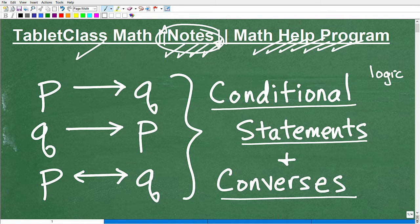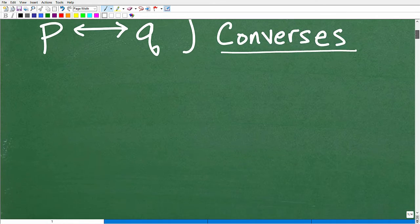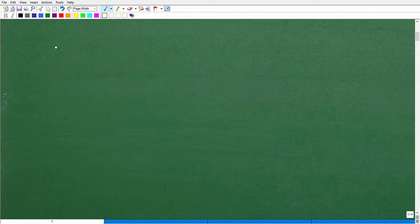All right, so we got P, Q, Q, P, P, and Q. What does this all mean? Conditional statements and converses. What's this all about? Well, kind of give you a quick introduction here in a second. It's about logic. And in math, we really want to know how to prove things. So we want to prove a statement.